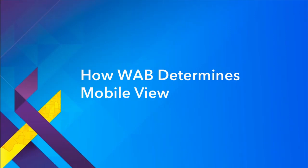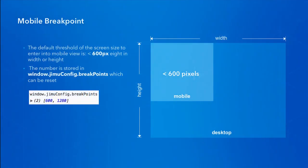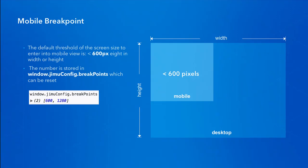The first topic is how web app builder knows it is in mobile view. In web app builder's framework, the GMU framework in the background sets a viewport size threshold to determine whether the app enters into mobile view or not. The default threshold is when one of the screen's width or height is less than 600 pixels.